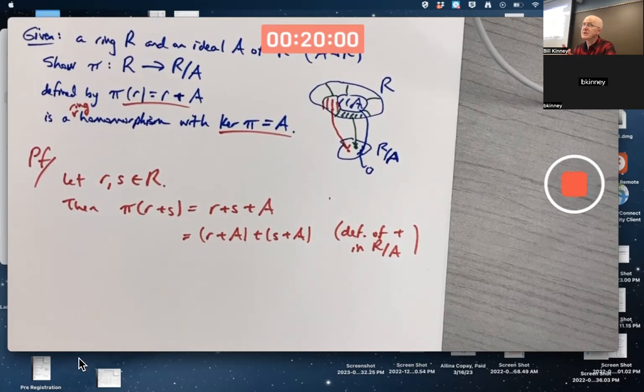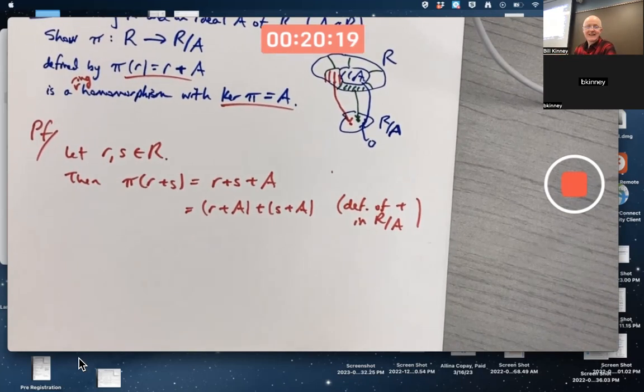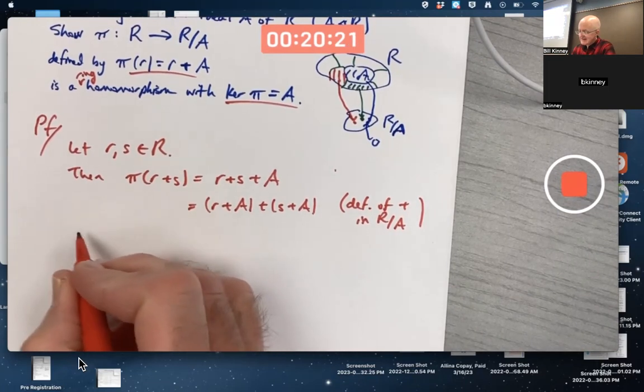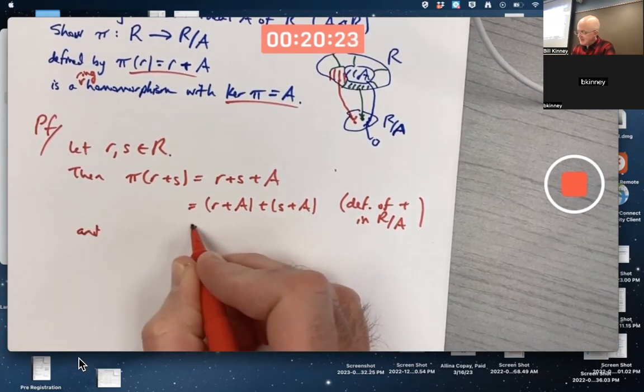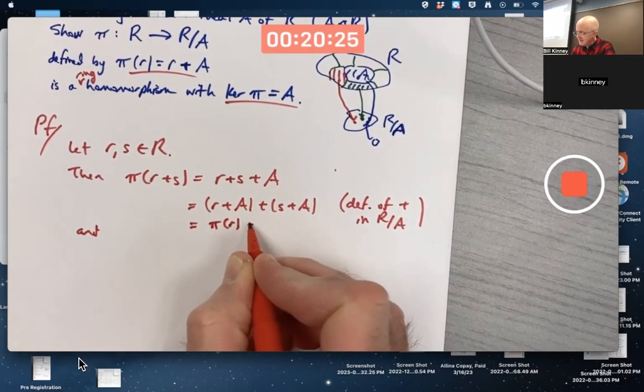If A is a subring and not an ideal, then the factor ring is not necessarily defined. Because the factor ring operations are not necessarily well-defined. Actually, addition would be well-defined, but not necessarily multiplication. Because addition, remember, rings are abelian groups under addition. So subrings actually are normal subgroups under addition. They're just not necessarily ideals under multiplication. A lot to think about.